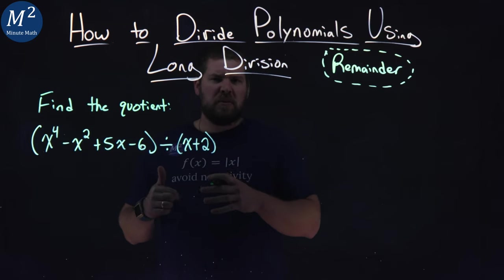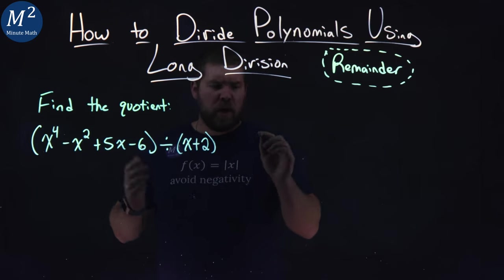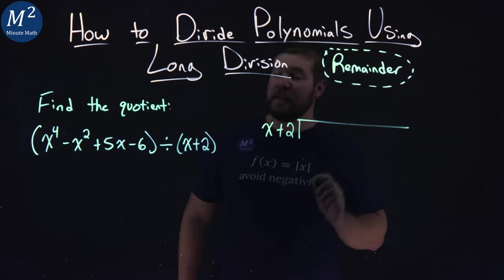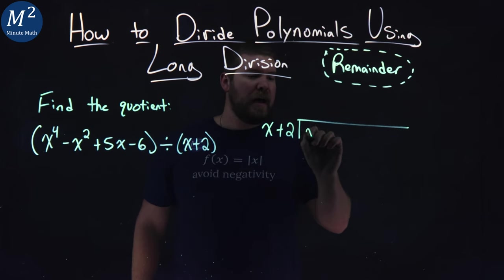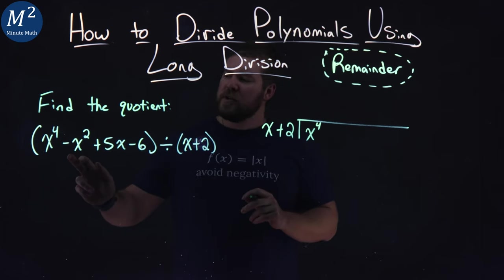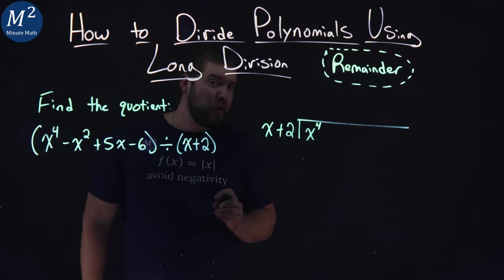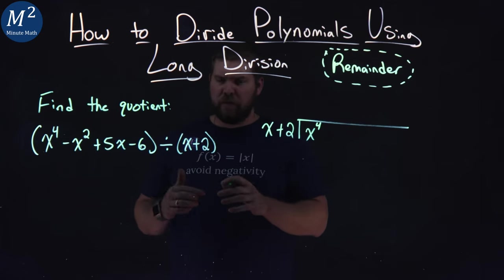Let's set it up like we do normal long division. We have x plus 2 here, and it's going to be going into the first part, x to the fourth power. But notice here, we jump from the fourth power to the second power.